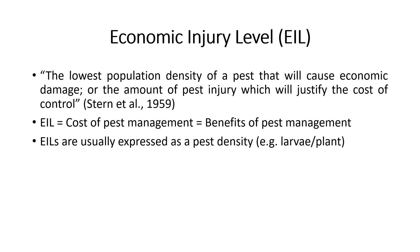In regards to the use of pest density to calculate EIL, Peterson and Higley in 2009 quoted their own statements from 2002 that the EIL actually represents a level of injury, not density of pest. However, numbers of pests per unit area are often used as an index for injury because injury can be very difficult to sample and measure. Using pest numbers as an index, EILs may be expressed as larvae per plant, beetles per sweep, grass weeds per meter square, or moths per trap.